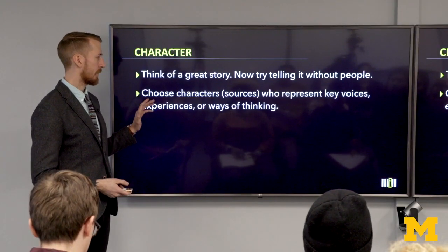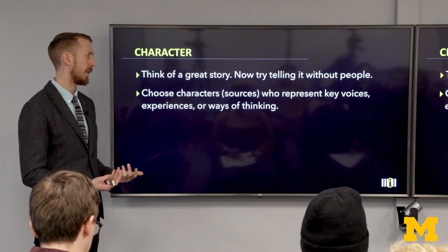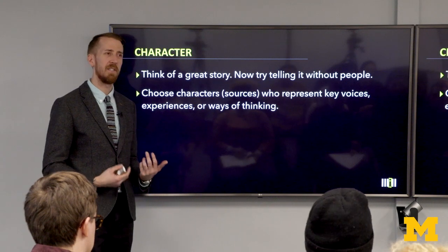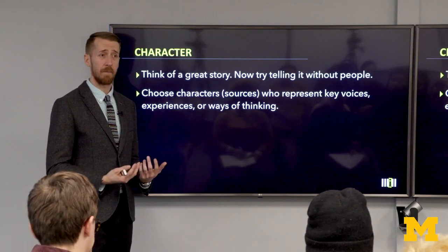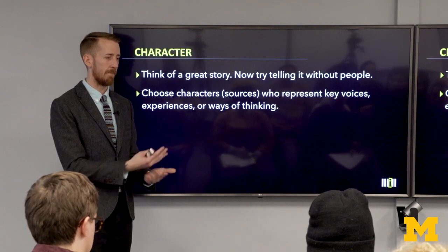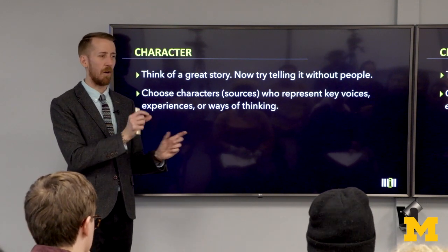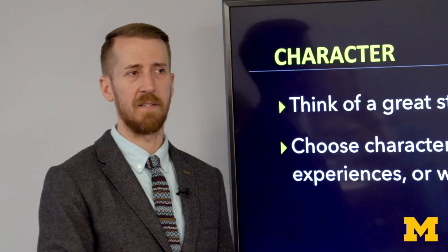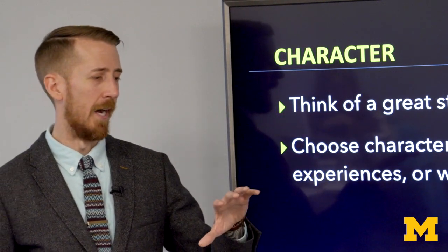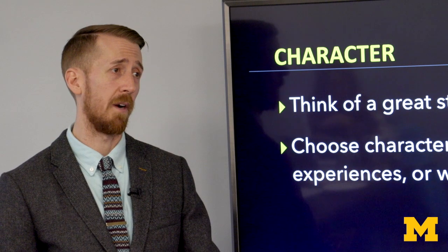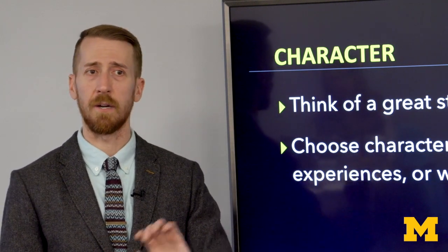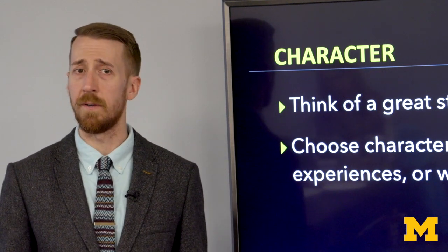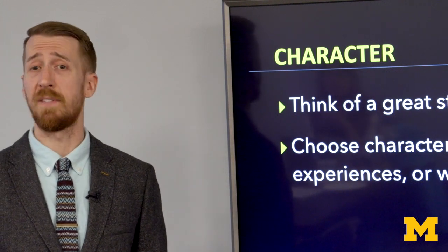So the more you can include these voices and characters, the stronger your narrative will be. What we're looking for in terms of that character or source are people who are going to represent key voices, key experiences, and ways of thinking. When I'm writing a story, whether it's breaking news or long form, I like to think of all the different components and who's able to speak to it. Going back to the Flint case, you want people on the ground dealing with the water crisis, people working in hospitals or healthcare, city officials, lawyers. Thinking critically about who your characters are will also expose loopholes of who you've left out of that narrative.